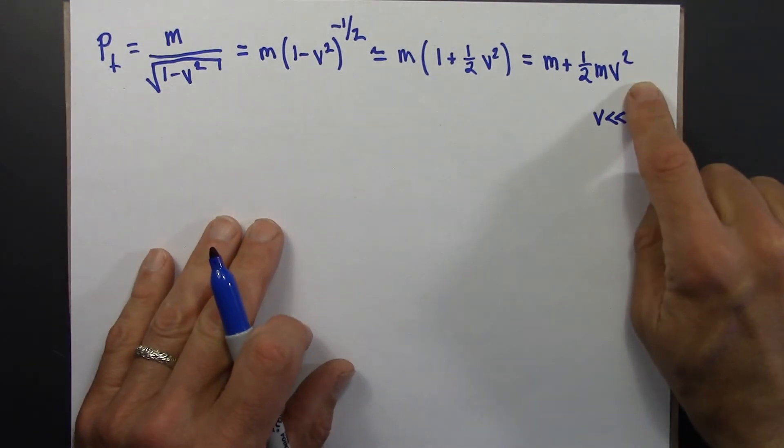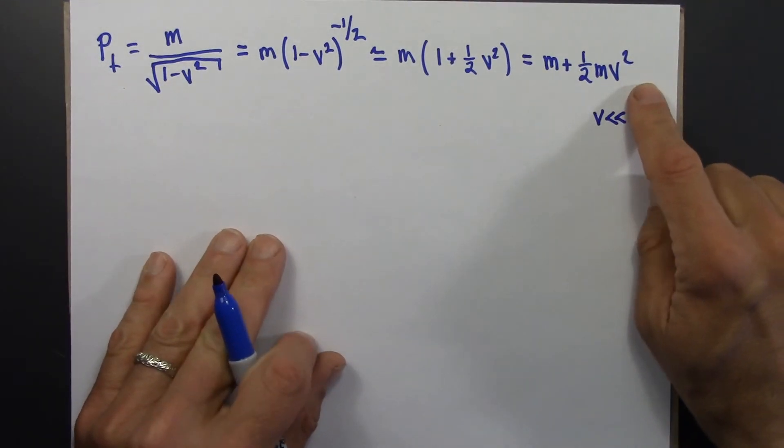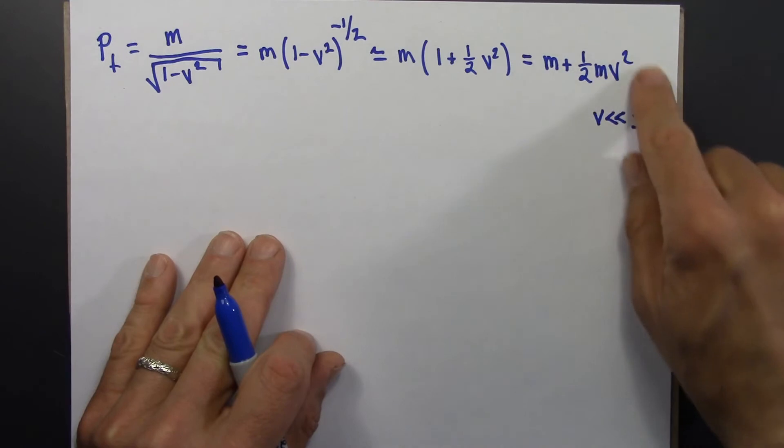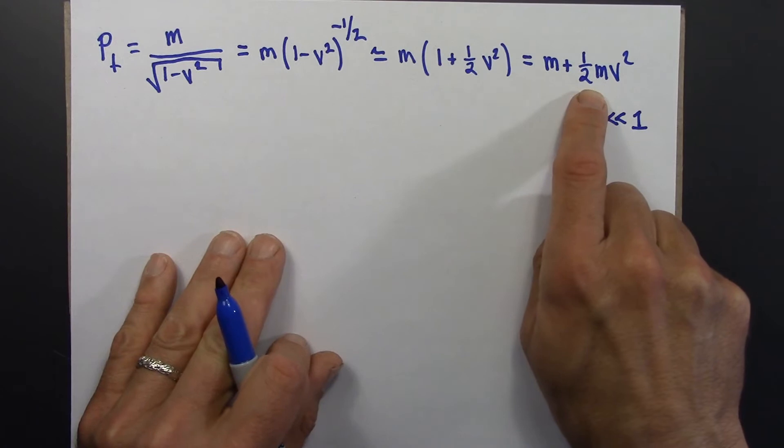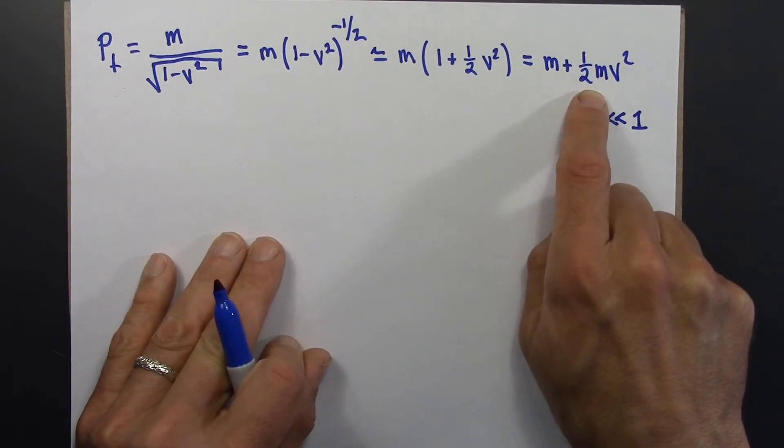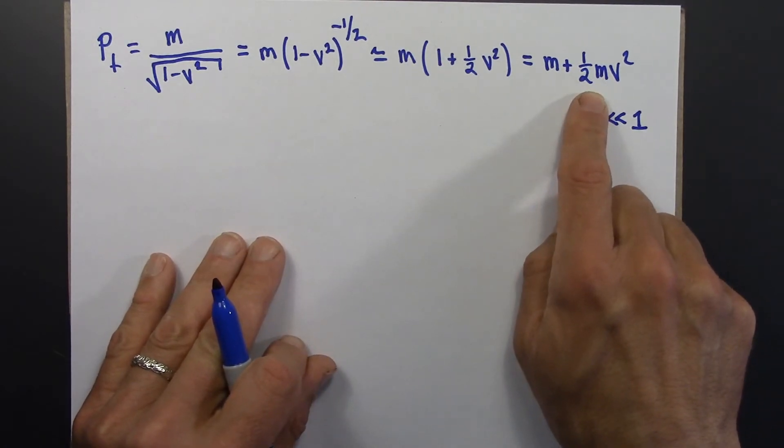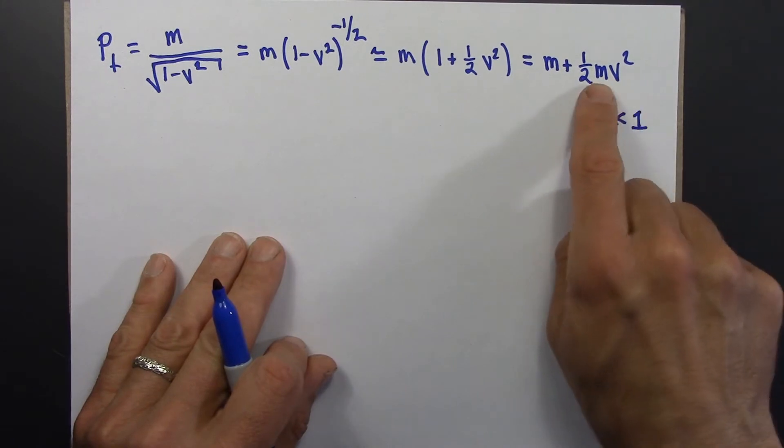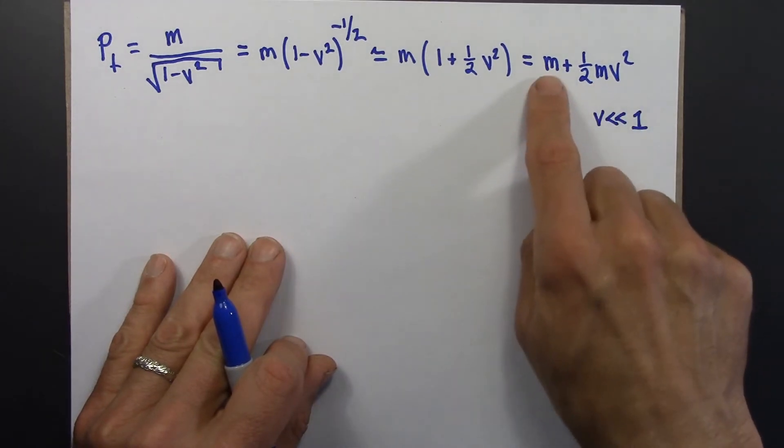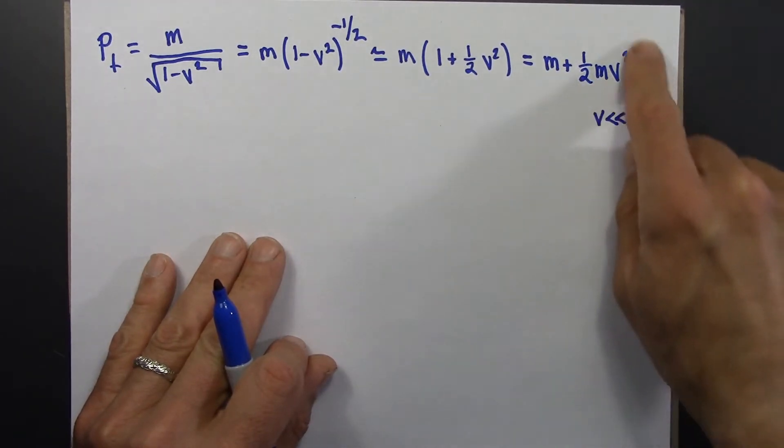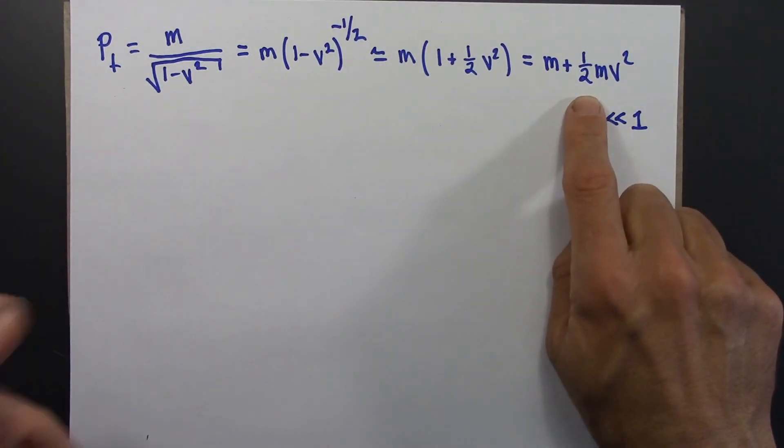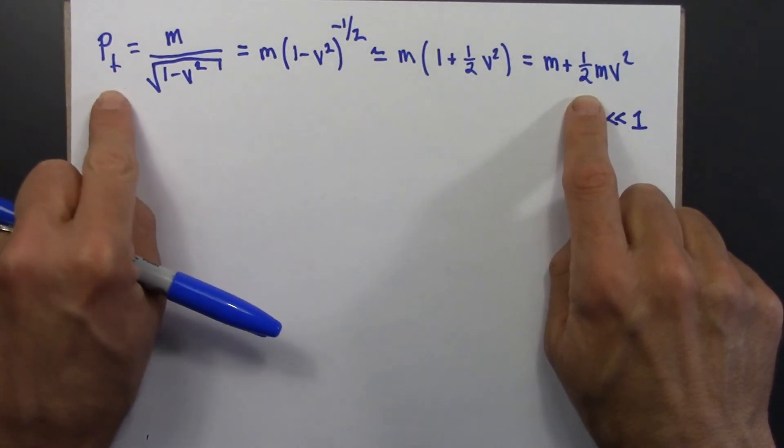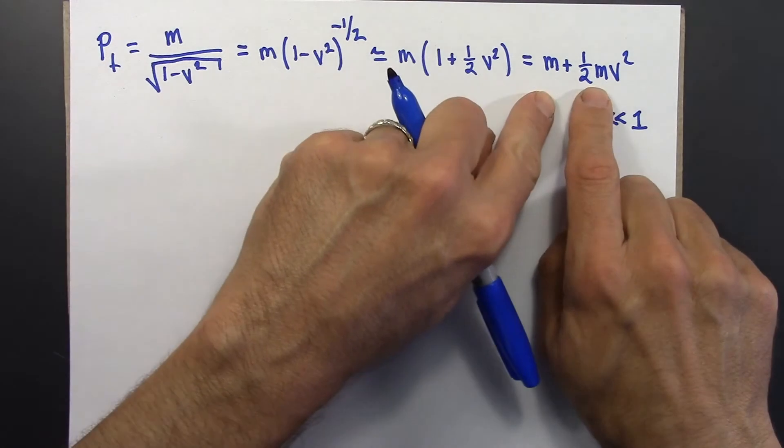So this term may look familiar to some of you. If you've taken an introductory physics class, you may recognize that this is the formula for non-relativistic kinetic energy. The energy associated with an object moving at speed v with mass m. And there's this other term here hanging out. But this, sure enough, is the non-relativistic kinetic energy. And so for that reason, we identify the time component of momentum as the energy of the object.